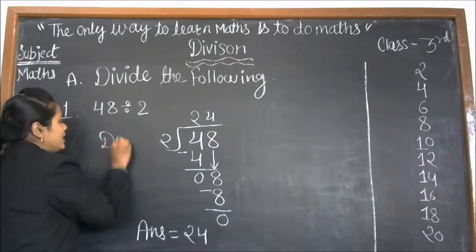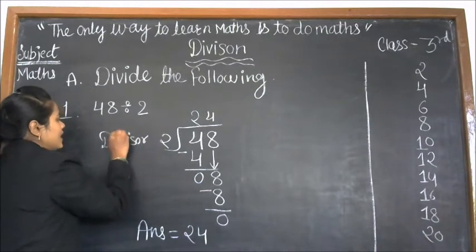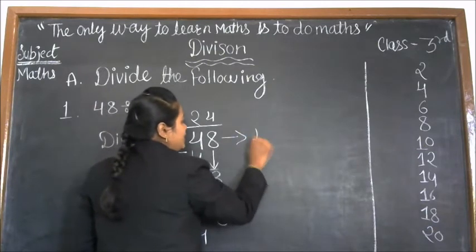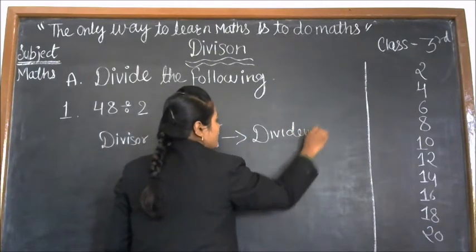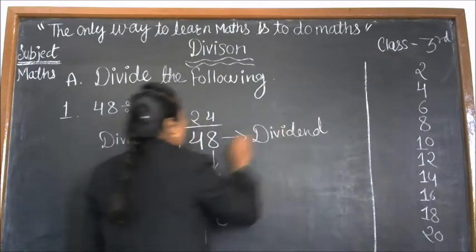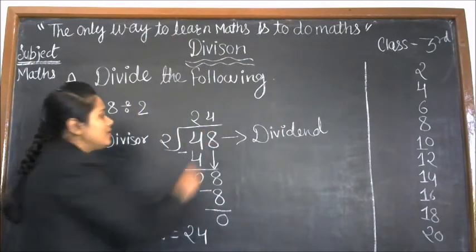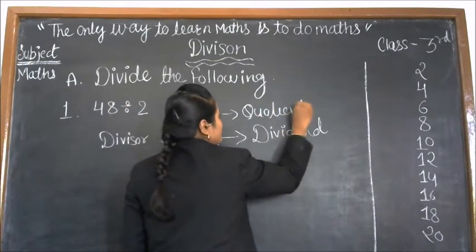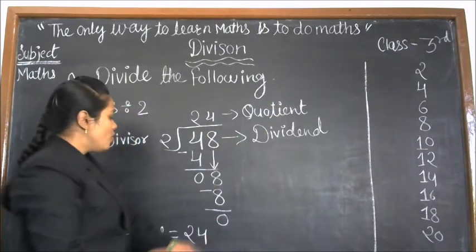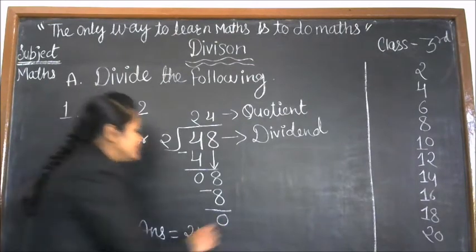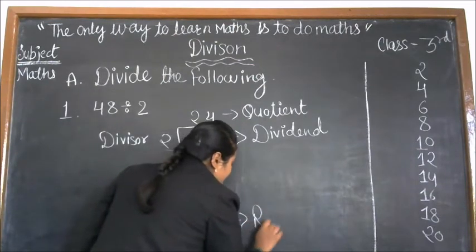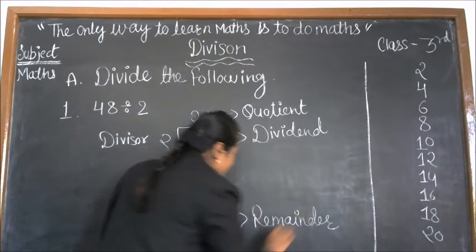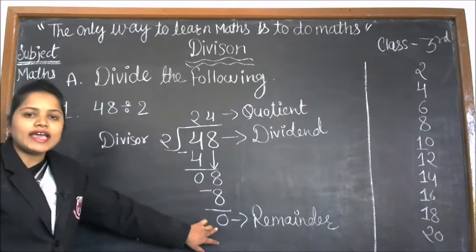We have 8 minus 8. It means our remainder is 0.